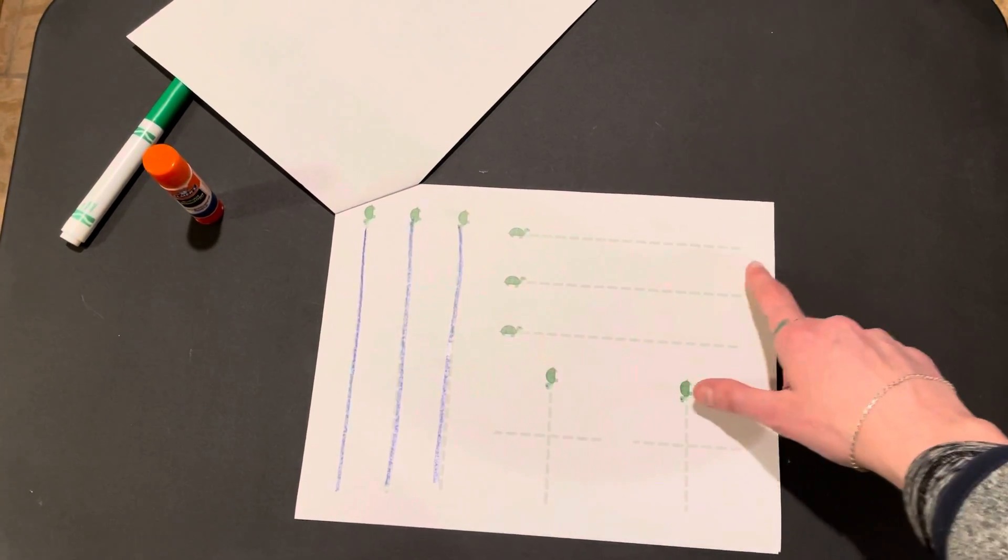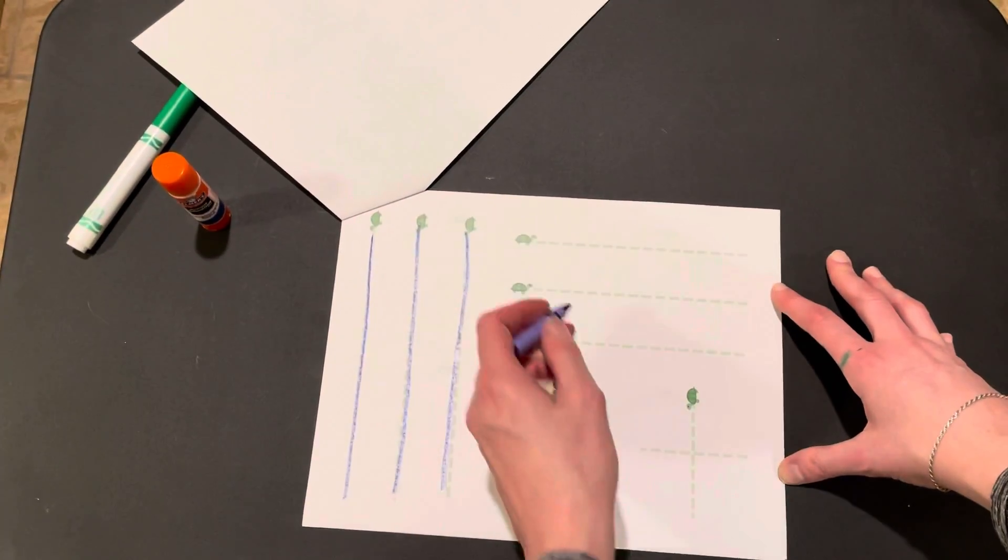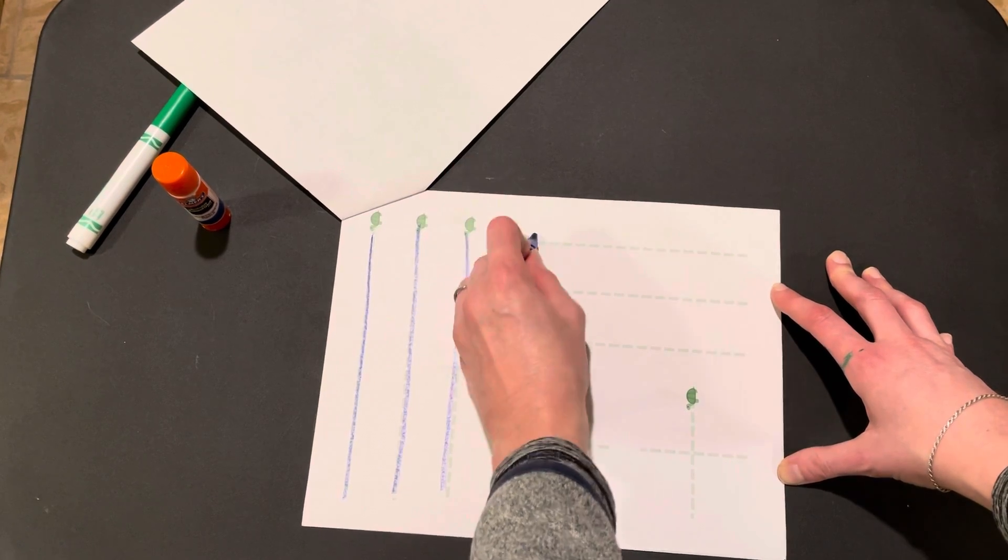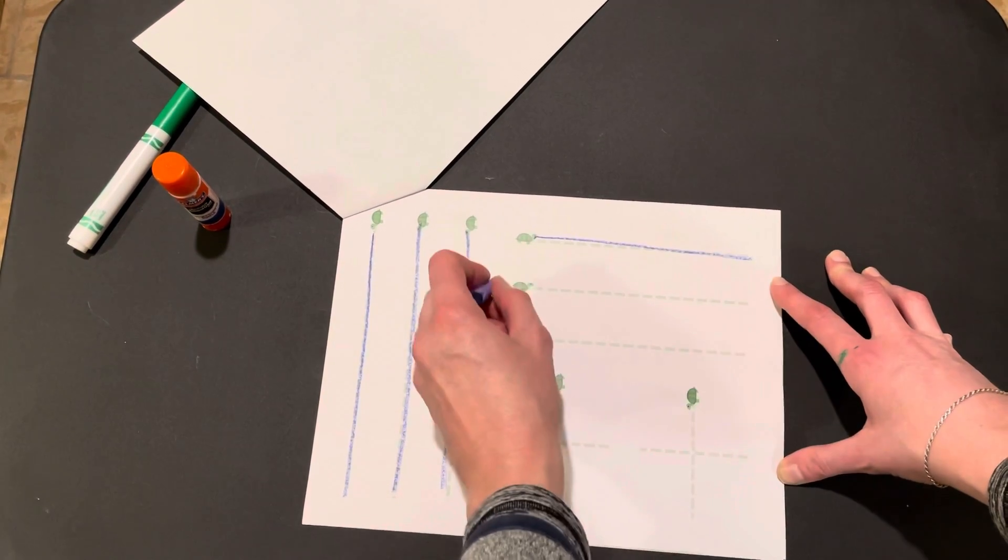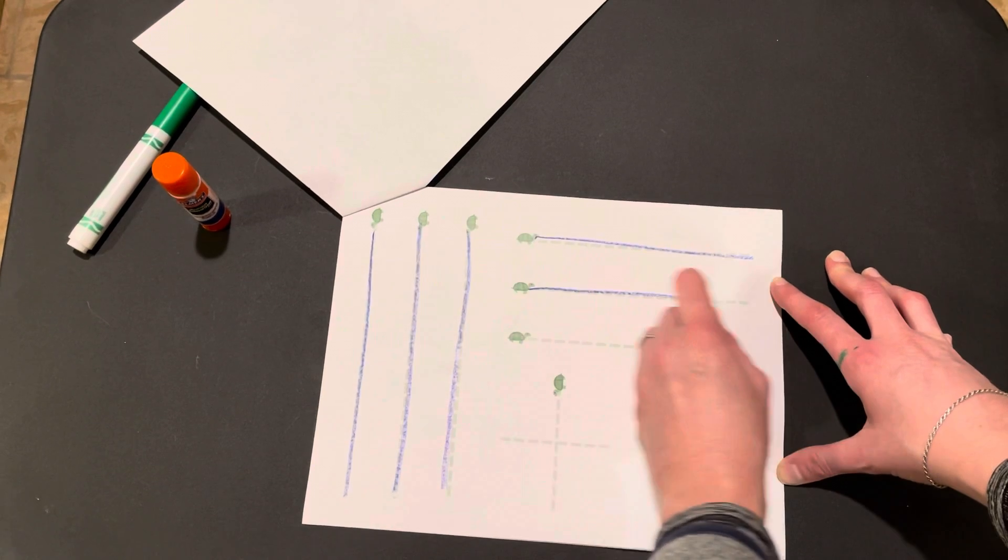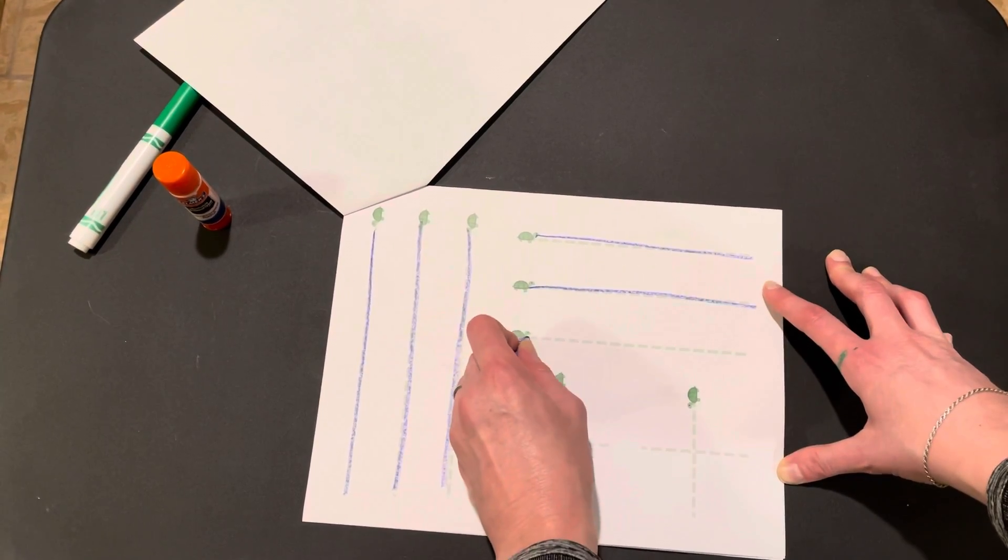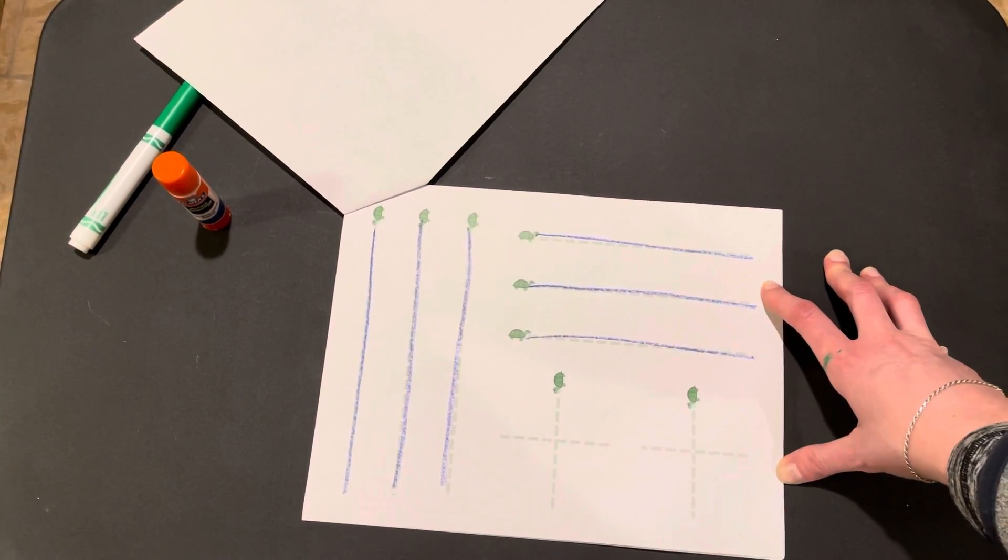Now you can work your way over to the horizontal lines, the lines across. Big line across. Big line across.